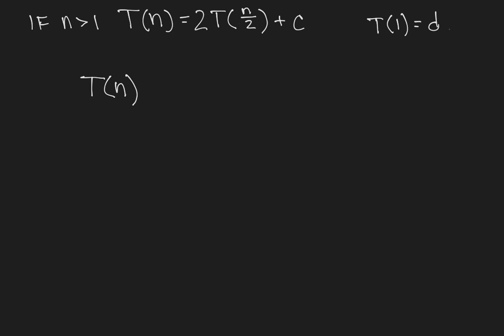But we can take a look at the recurrence equation that says that t of n is actually 2 times t of n over 2 plus c. So we can replace t of n with 2 copies of t of n over 2.